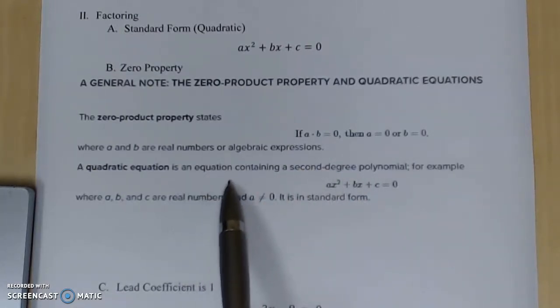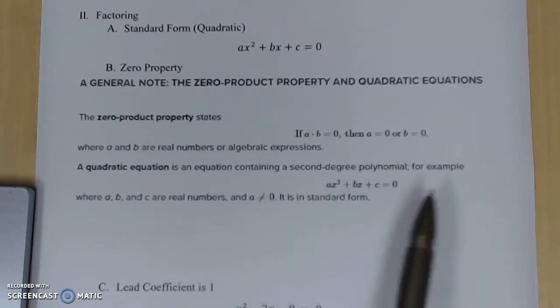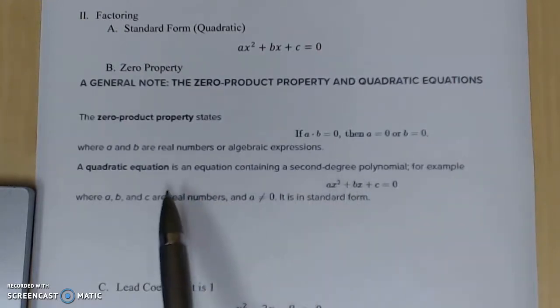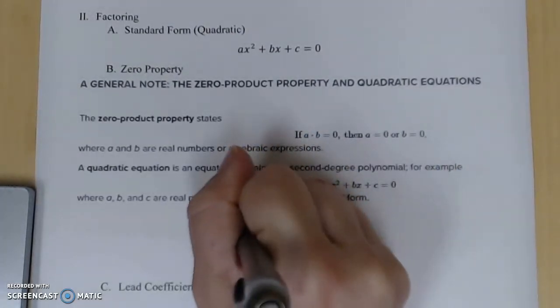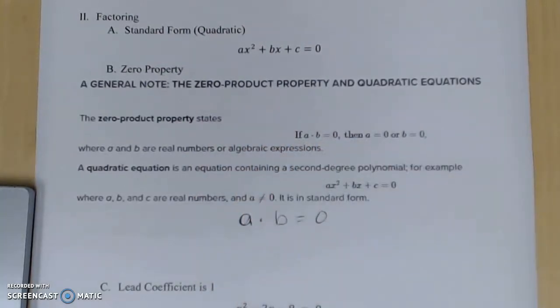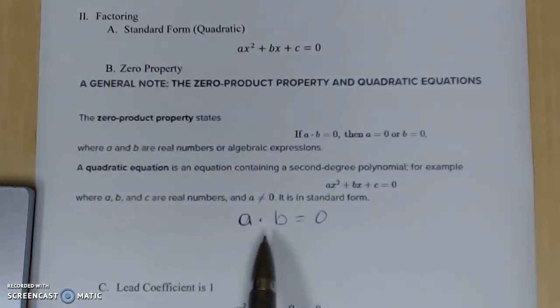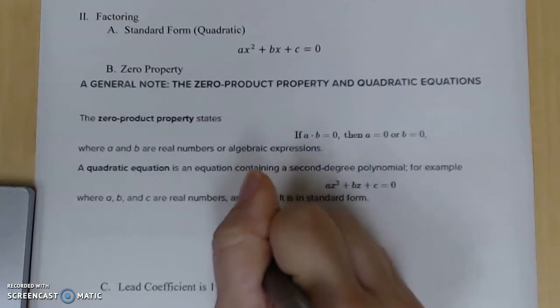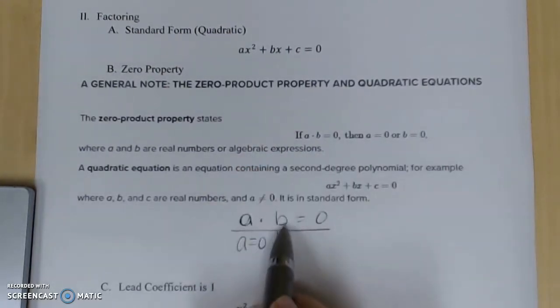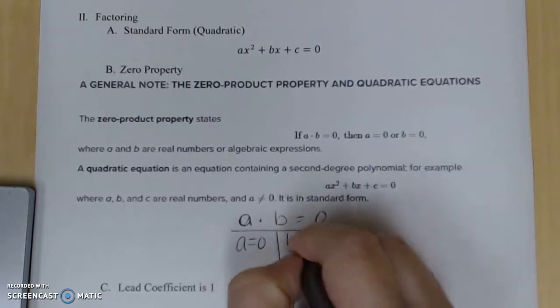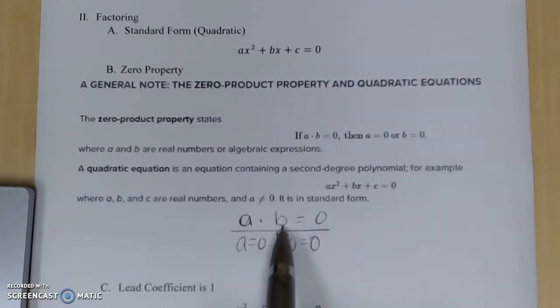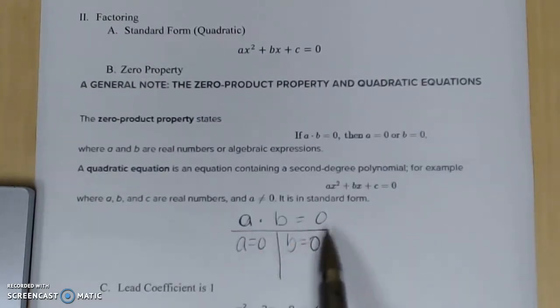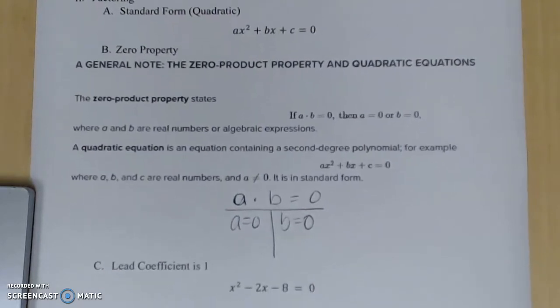Next thing we need to review before we start factoring is looking at the idea of a zero property. This is a general note with zero property and quadratic equations. The zero property states, if a times b is equal to zero, then either a equals zero or b equals zero, where a and b are real numbers or algebraic expressions. We say that a quadratic equation is an equation containing a second-degree polynomial where a, b, and c are real numbers and a cannot be zero.